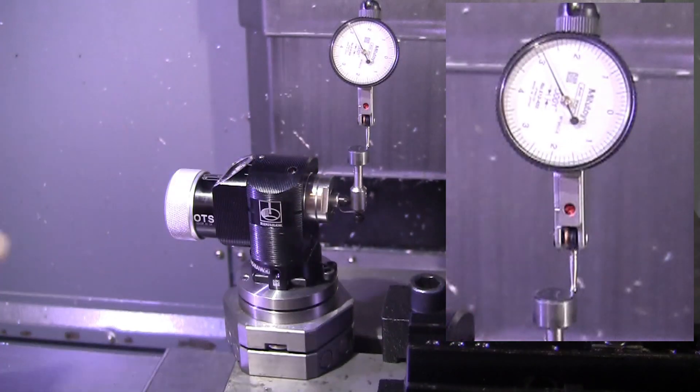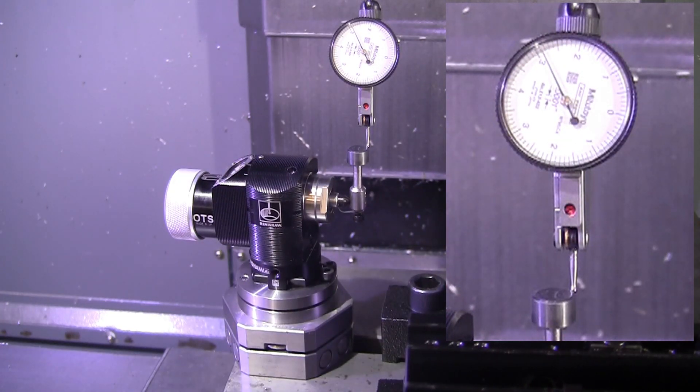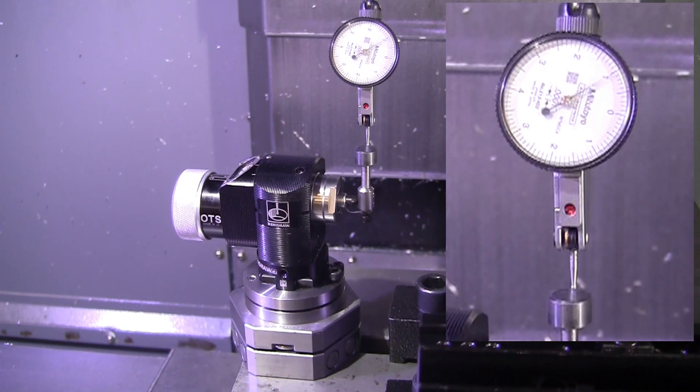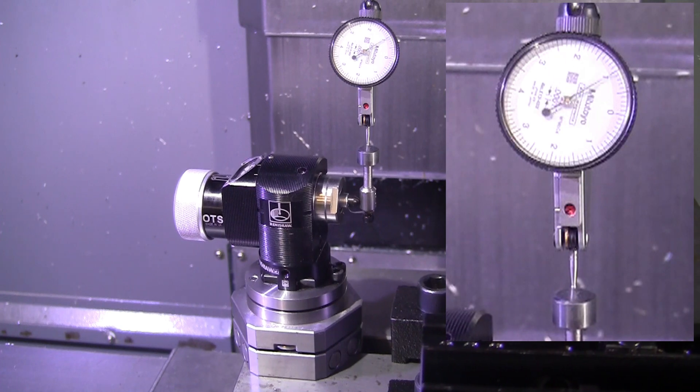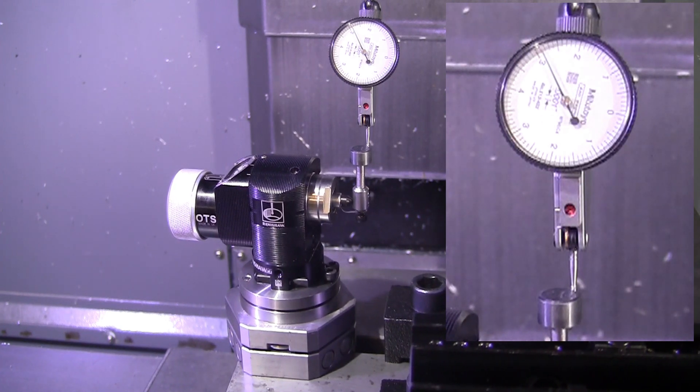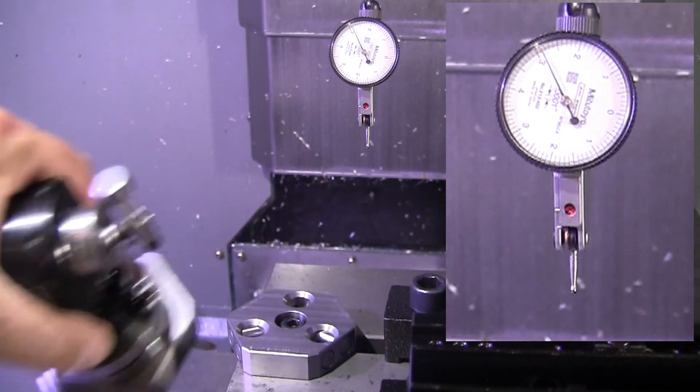The needle should go back to the same point—in this case, zero. As you can see, it is repeating. As it turns out, kinematic mounts are extremely repeatable; they're repeatable to microns.